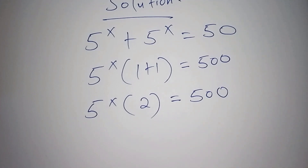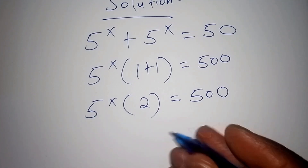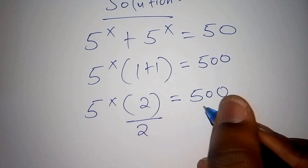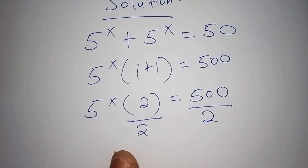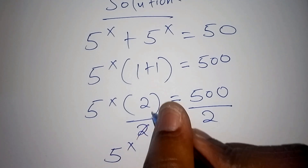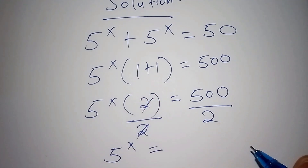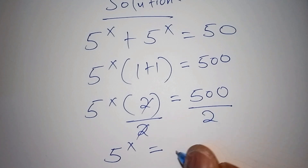Now we want to remain with 5 to the power of x, so we divide both sides by 2. The 2s cancel, and 500 divided by 2 gives us 250. So 5 to the power of x equals 250.